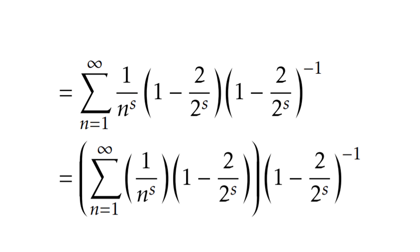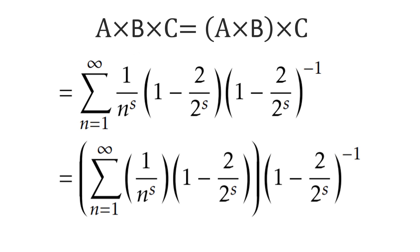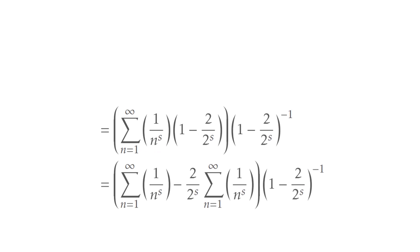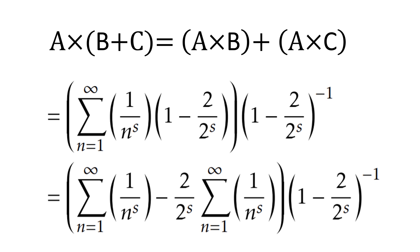We keep the last function in the center and I will explain how to get the next function. The top part is generally reserved for the math principles — these principles are simple and the order in which we use them is very important. We use the principle: a times b times c equals a times b, then times c. We continue to unfold the zeta function by multiplying 1 divided by n to the power s by 1, and then multiplying 1 divided by n to the power s by 2 divided by 2 to the power s.